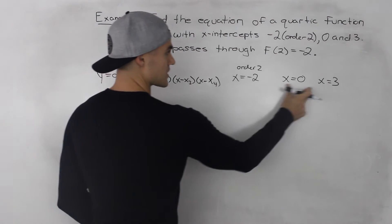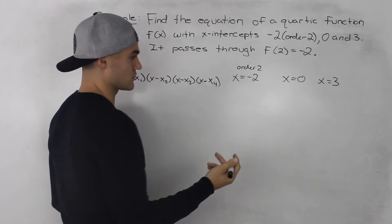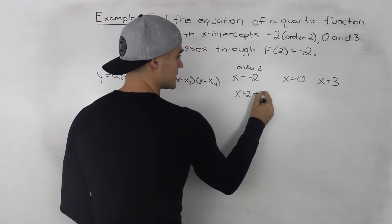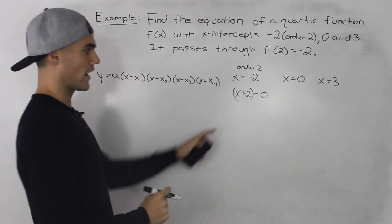So we figure out these brackets with the x-intercepts we're given. We wrote out the x-intercepts here. x = -2, we can rearrange that and have that as x + 2 = 0. So that would be one of the brackets.